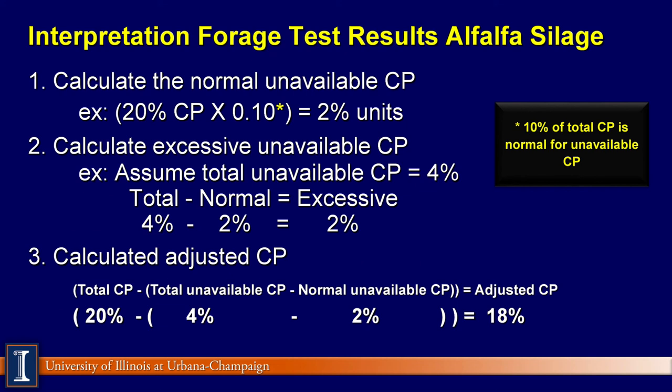Therefore, for this alfalfa, 4% total unavailable crude protein minus 2% normal unavailable crude protein equals 2% excessive unavailable crude protein. For step 3, one subtracts the normal percentage of unavailable crude protein (2%) from the total unavailable crude protein (4%) to determine the excessive unavailable crude protein of 2%. This 2% excessive unavailable crude protein is then subtracted from the total crude protein of 20%, giving an adjusted crude protein content of 18% for this alfalfa silage, which is then used to balance rations.